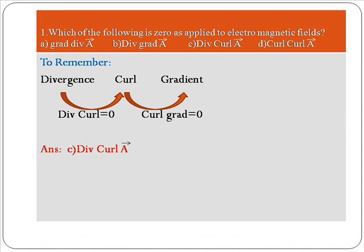First problem: which of the following is zero as applied to electromagnetic fields? Option A: gradient divergence of a vector. Option B: divergence gradient of a vector. Option C: divergence curl of a vector. Option D: curl curl of a vector. We have to remember that divergence of curl is always equal to zero, and curl of gradient is always equal to zero. So option C, divergence of curl of a vector, is the right answer.